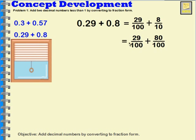When I add 29 plus 80 together, I get 109. Now 109, I can see that I have a hundred hundredths in there. So that's one whole and nine hundredths. Written as a decimal would be 1.09.